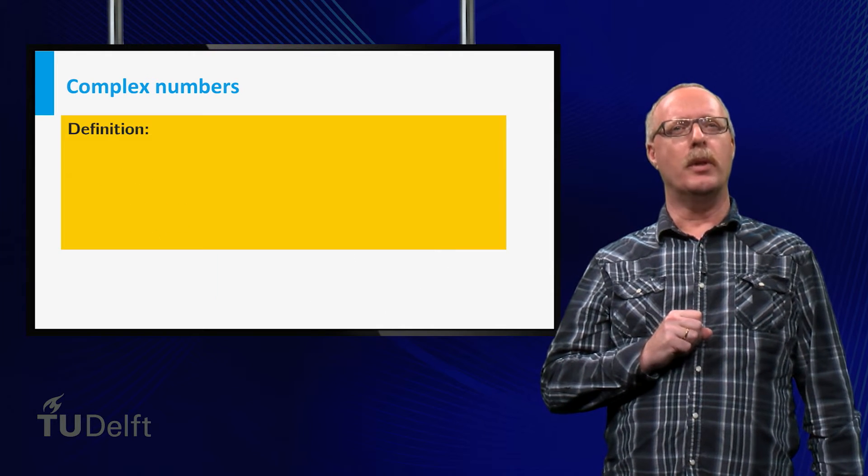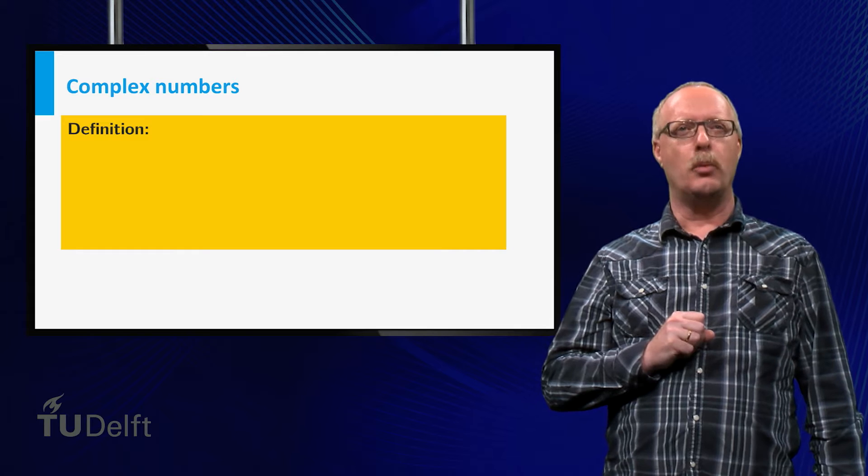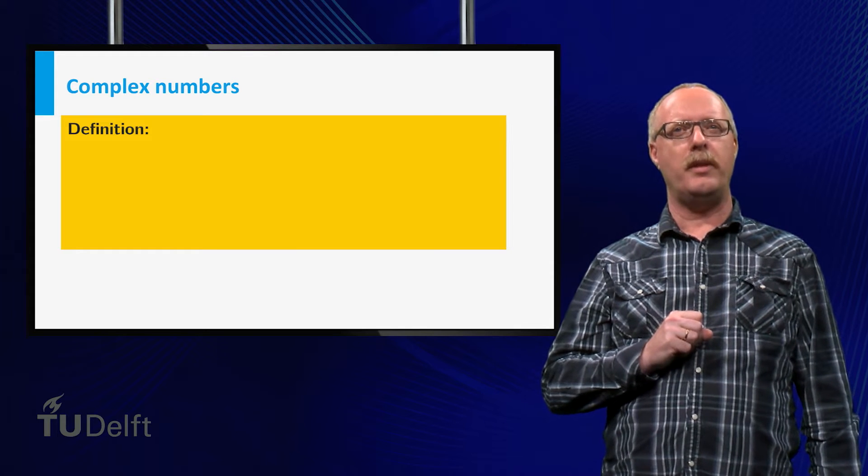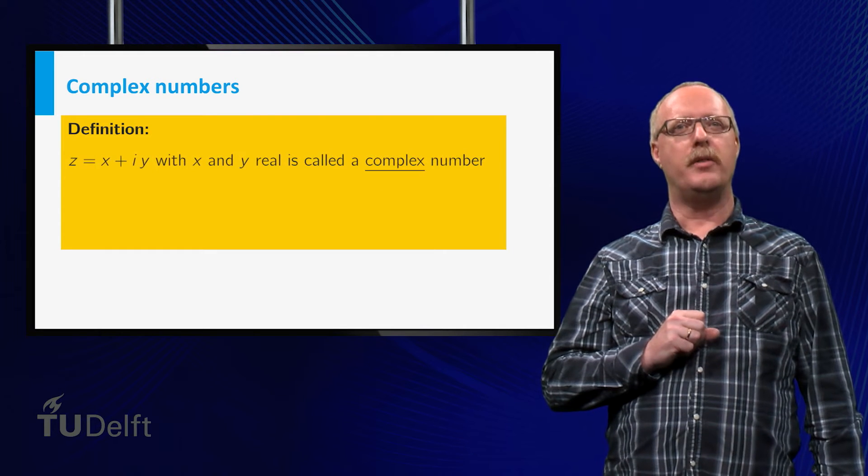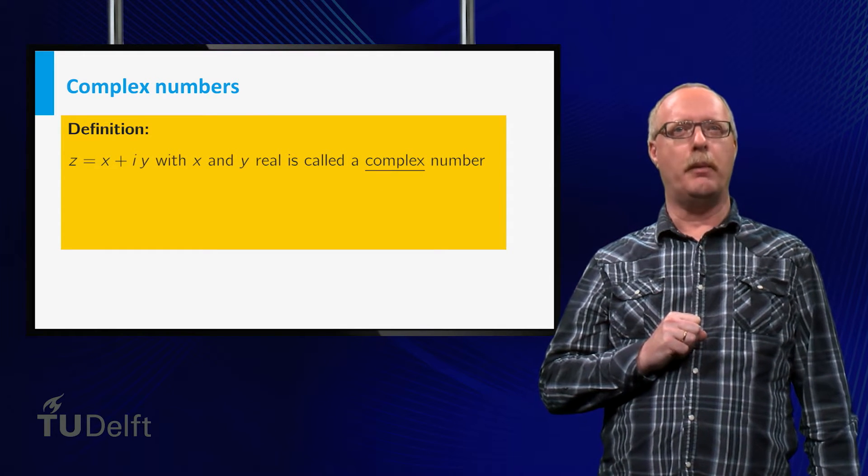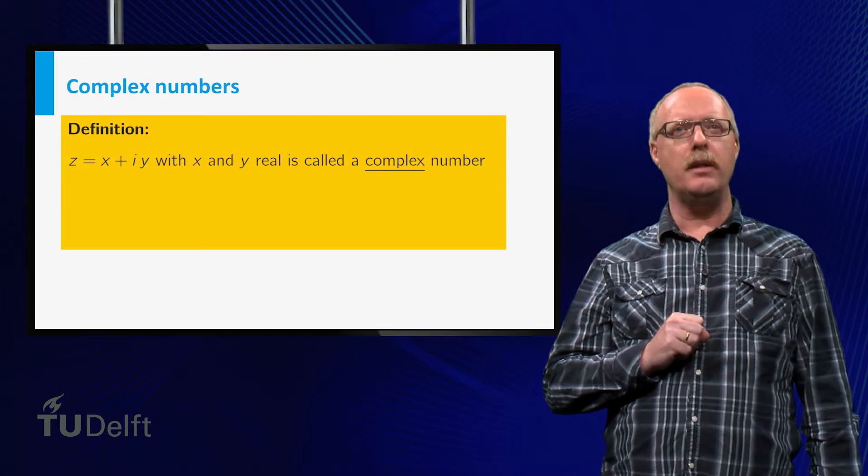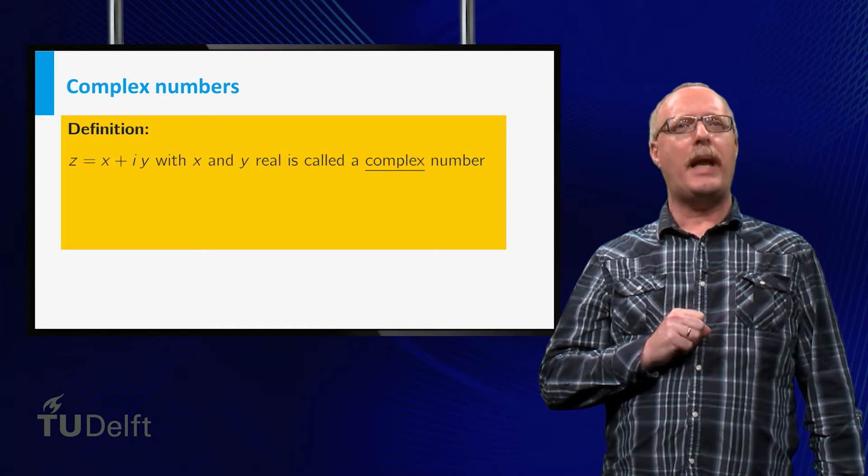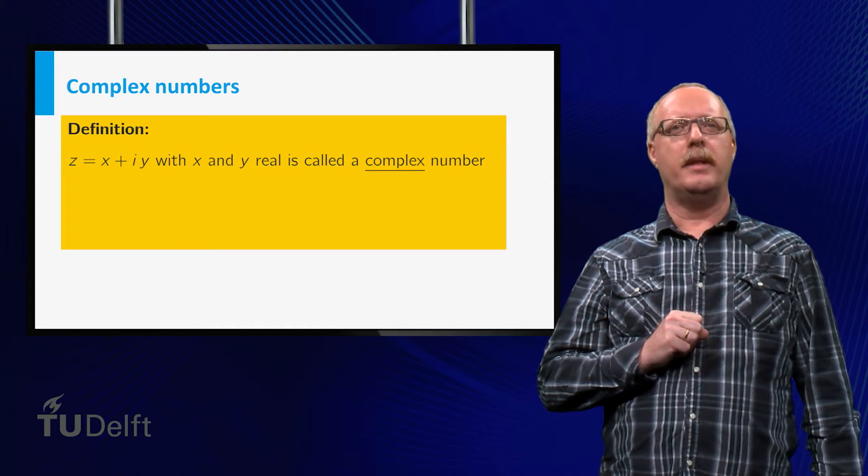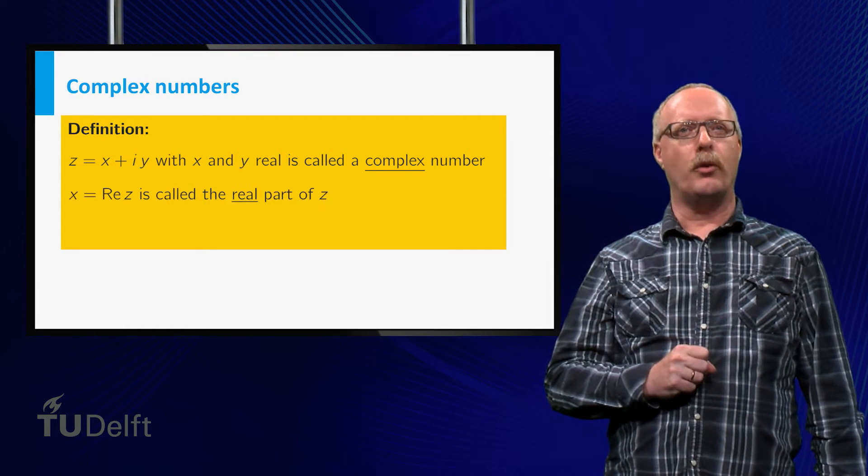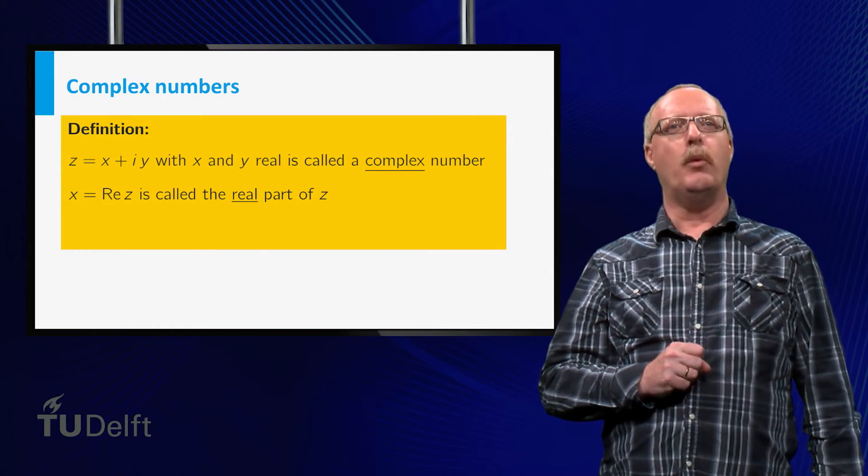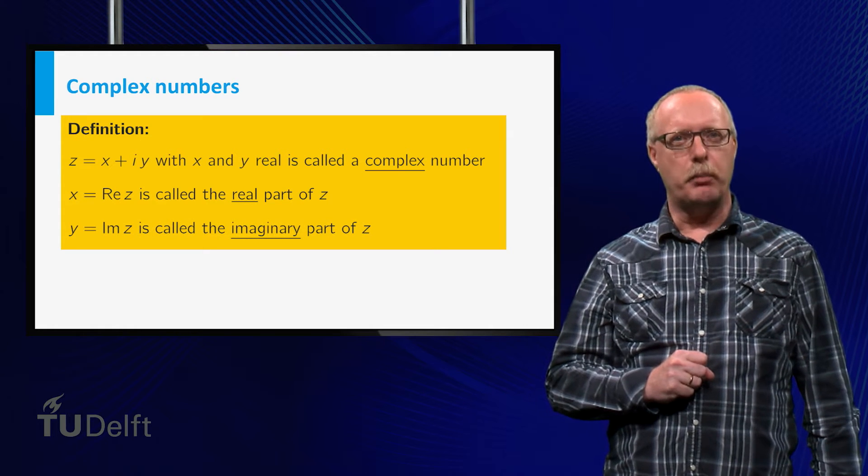Based on this new imaginary number i, we enlarge the set of real numbers and define so-called complex numbers. z is equal to x plus i times y, with x and y real, is called a complex number. This number consists of two parts. x is called the real part of z, and y is called the imaginary part of z.